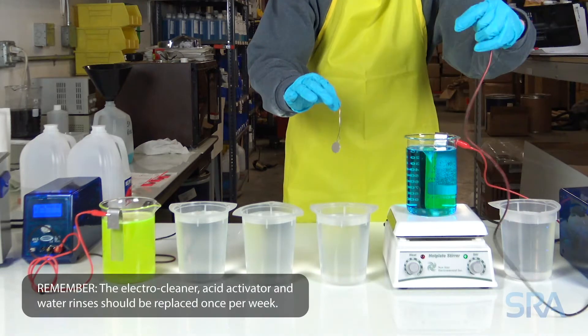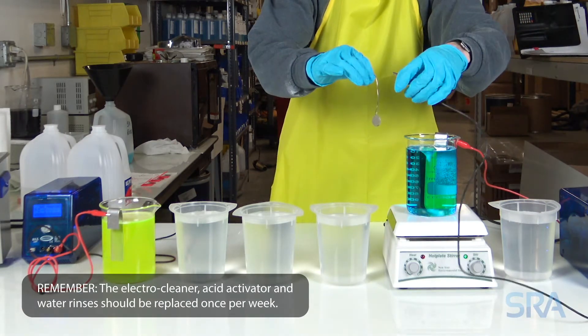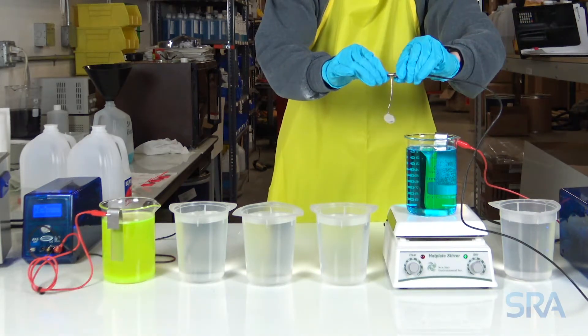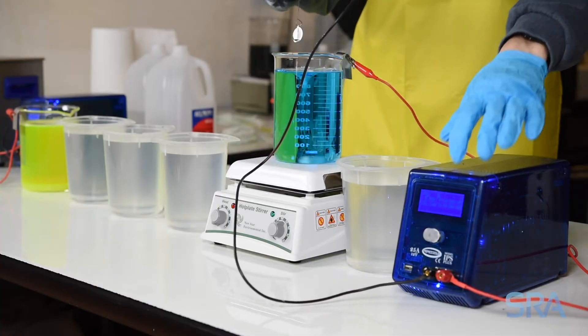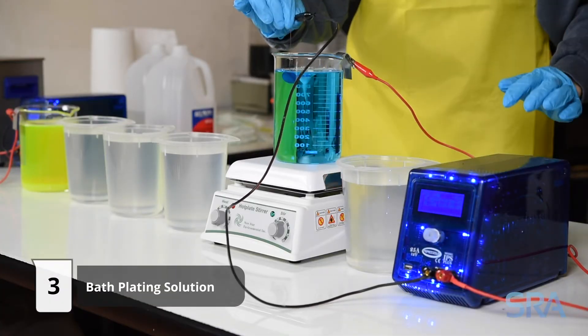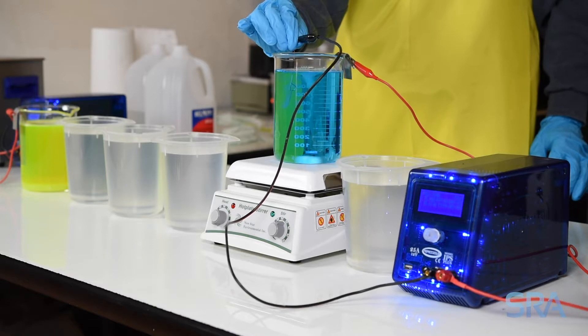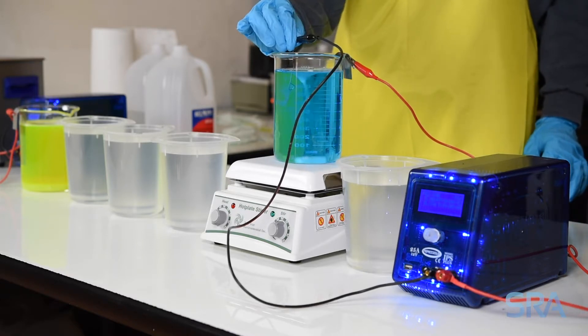Finally, connect the negative lead from the plating rectifier to your item. Turn on the unit and begin plating. We're going to plate for about 40 seconds at 110 degrees Fahrenheit with 5 volts applied to the stainless steel anode.